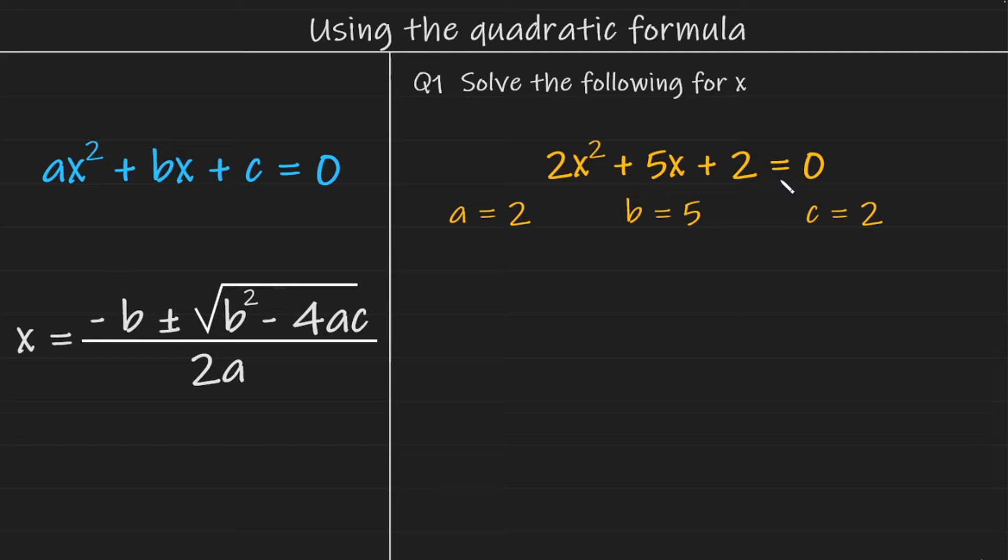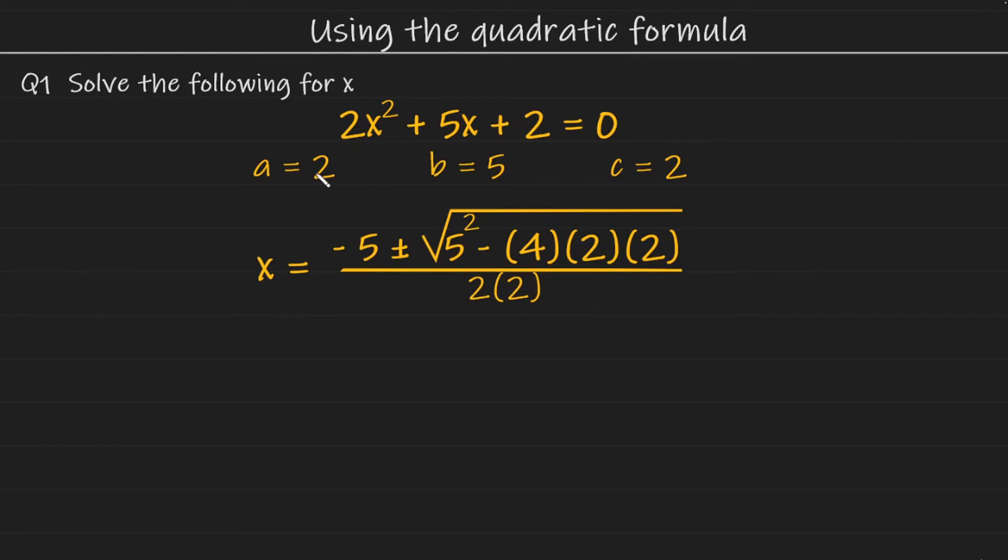Now since this quadratic equation is equal to zero, we can go ahead and use the quadratic formula to solve it. Now let's rewrite the quadratic formula, but with a, b and c replaced by the given values. And that looks like this. As you can see, the numbers have replaced the letters in the quadratic formula.